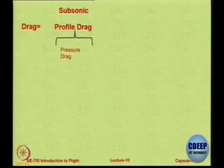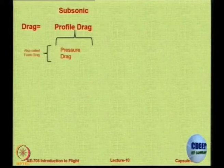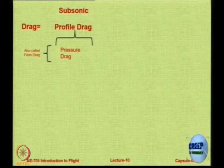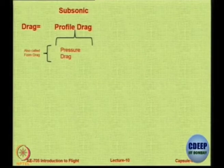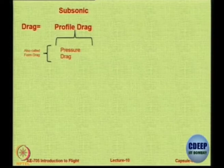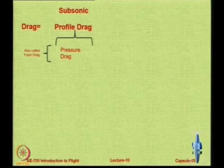Let us look at the components of drag and break it down into small components. Basically, drag consists of many components. The first component is profile drag. This is also called pressure drag or form drag, because it depends on and is driven by the shape of the body — mostly the frontal area. The pressure drag name comes because it is caused by the creation of pressure on the upper and lower surfaces due to the shape of the body.